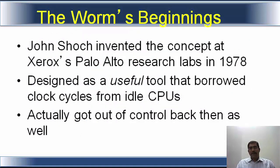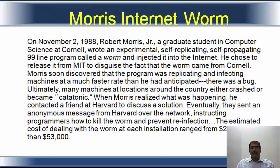What are worms' beginnings — when did it start? It started in 1978 and John Shoch invented the concept at Xerox PARC. It was designed as a useful tool that borrowed clock cycles from idle CPUs, but it actually got out of control even then. The Morris worm was a very famous internet worm; there is an article about it replicated here.